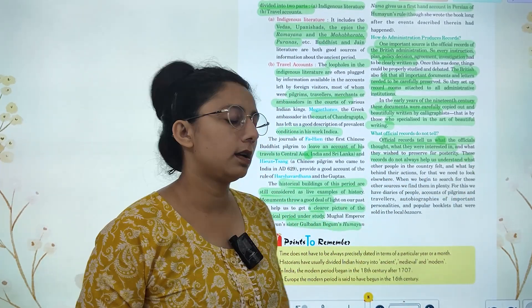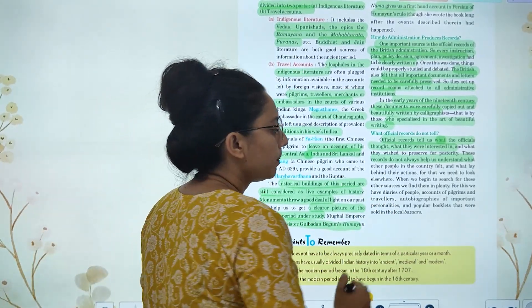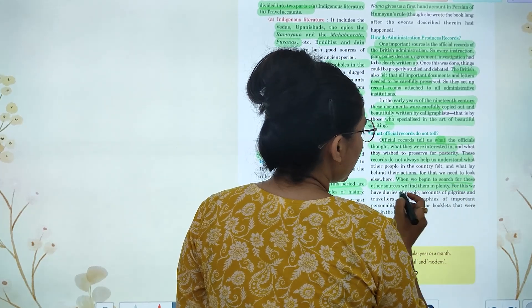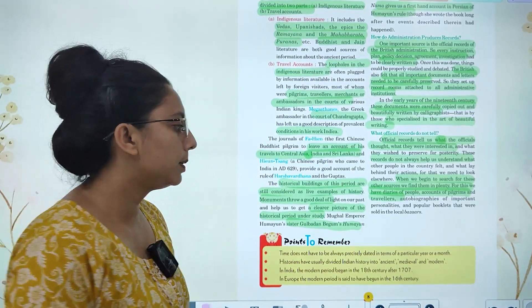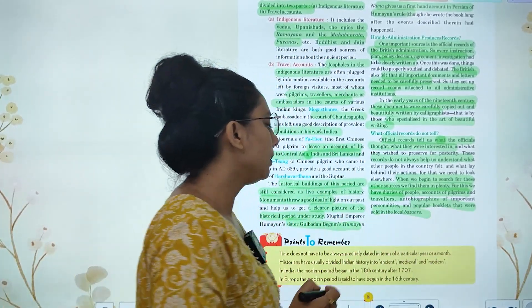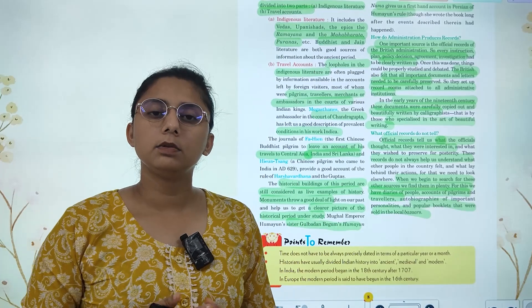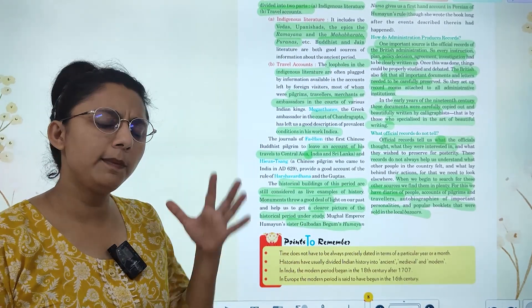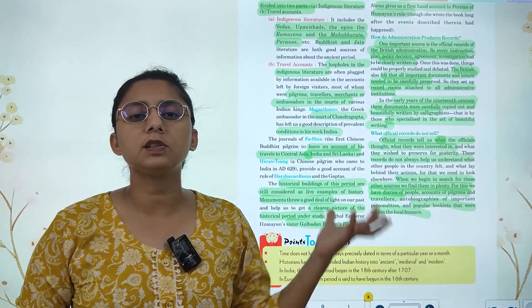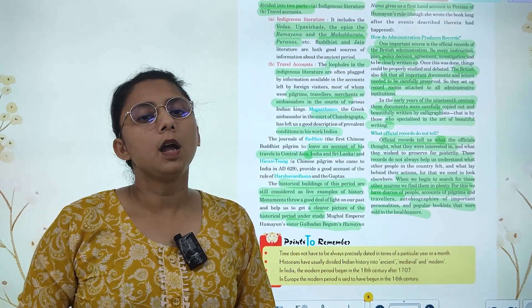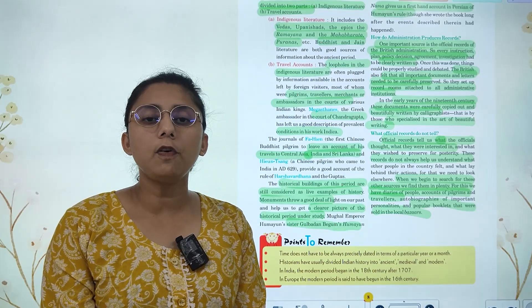Official records tell us what the officials thought, what they were interested in, and how they wanted to preserve their interests. But these records won't always help you understand the common people. So when we search for other sources, we find diaries of people, accounts of pilgrims and travelers, autobiographies of important personalities, and popular booklets sold in local markets. Reading them tells us much more. Hope you understood the chapter. That's all for today. Thank you.